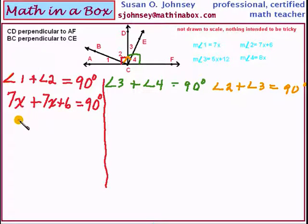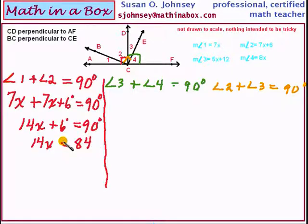This will be 14x plus 6 equals 90. Subtract 6 from both sides and that 6 really should have a degree mark on it. That's 14x will be equal to 84. Divide by 14 to solve for x and we will get 6. So x in this problem is represented by 6. Now this is the same x throughout the problem so I'm going to go ahead and solve these other two equations but x will still remain to be 6.